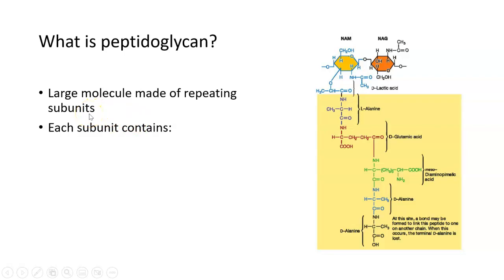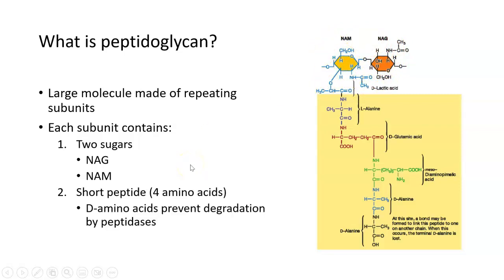Each one of these repeating subunits has two sugars, NAG and NAM. And you can see those over here in the picture on the right. NAG is in orange, NAM in yellow. And then in addition to the two sugars, the subunit will have a short peptide or short string of amino acids, usually four or five. So this whole image on the right is one peptidoglycan subunit or piece. It's got the two sugars, NAG and NAM, and it's got this short peptide.